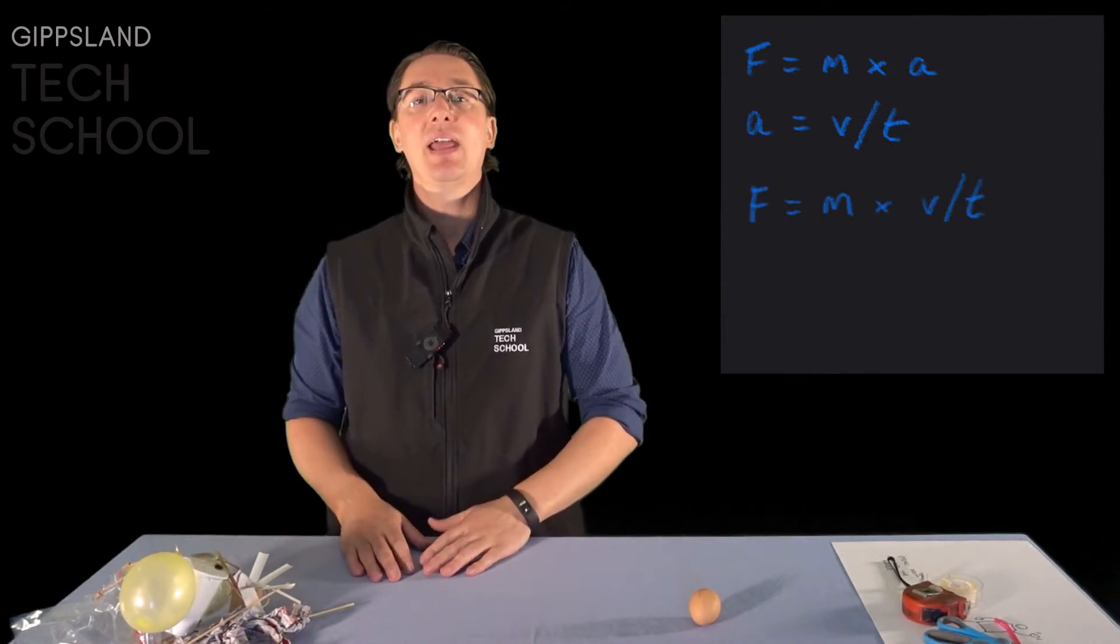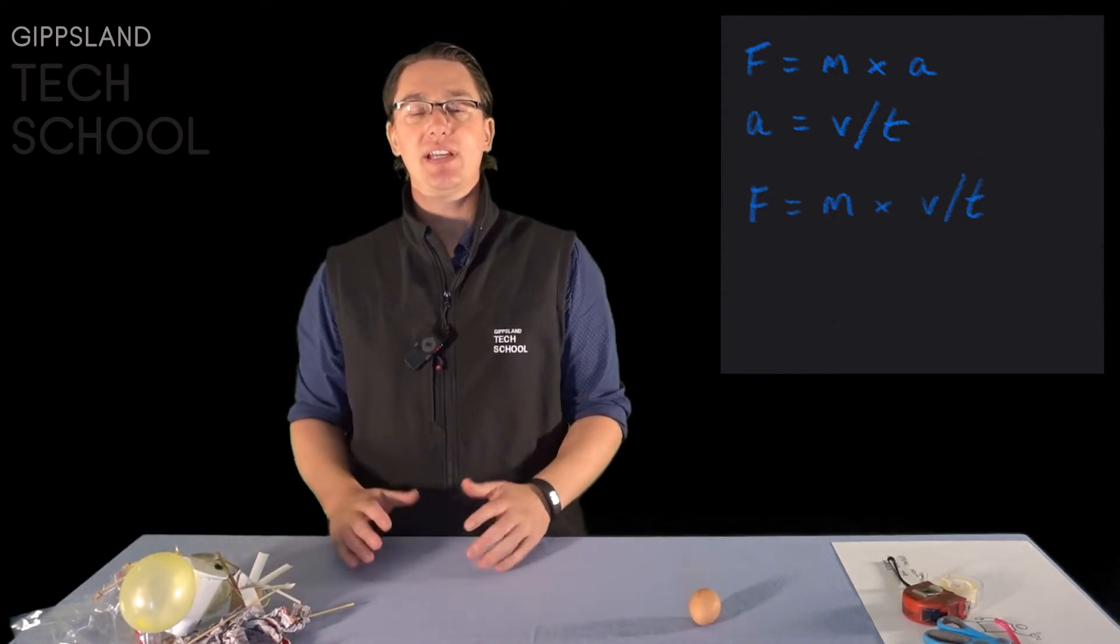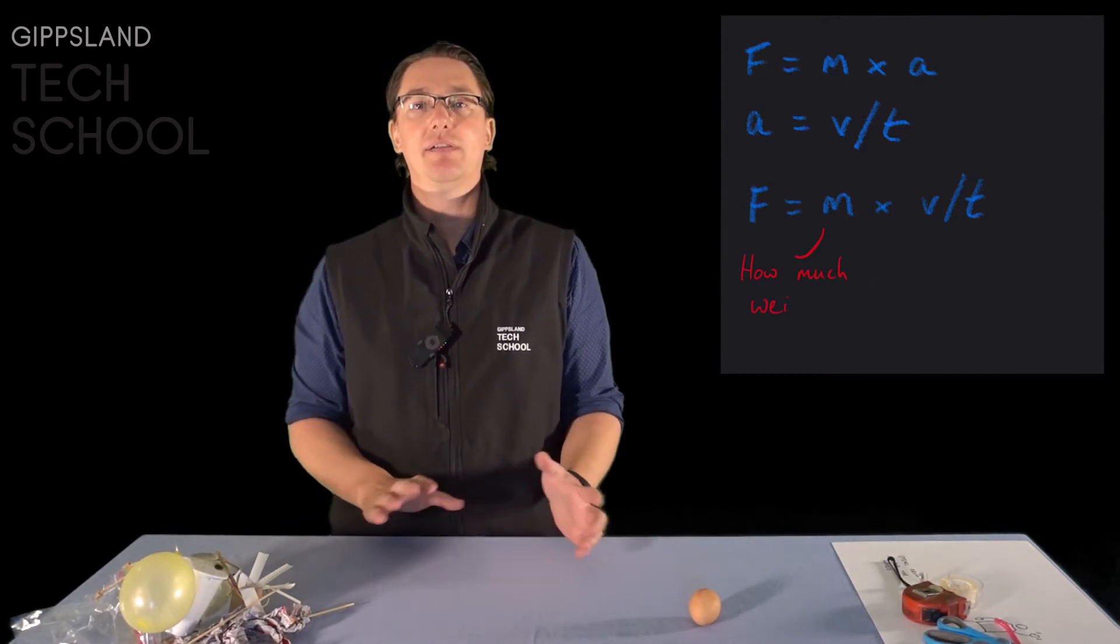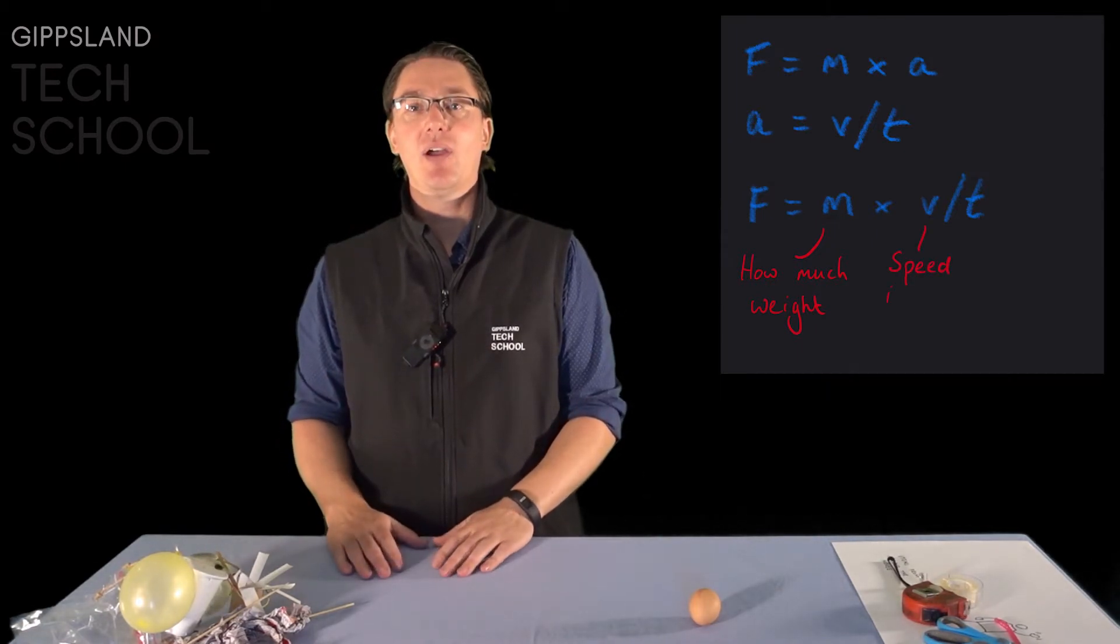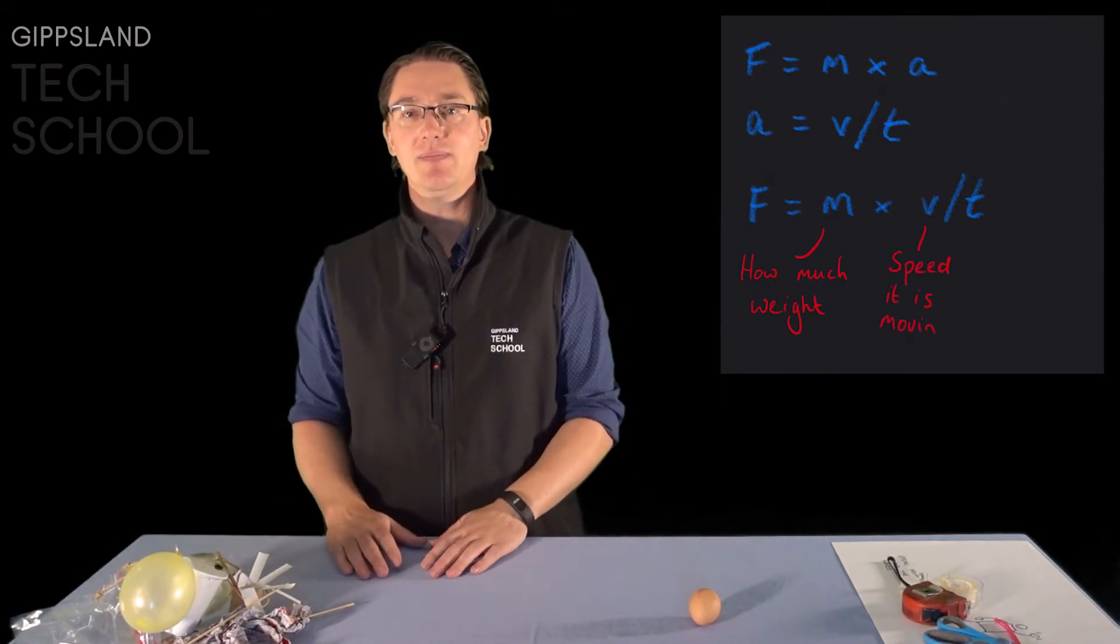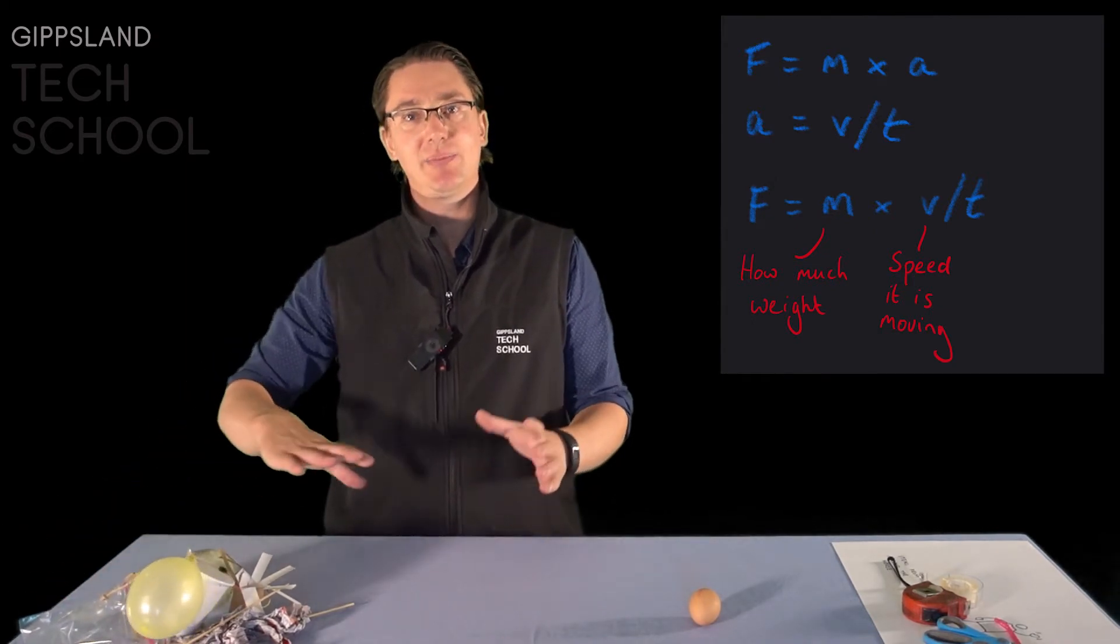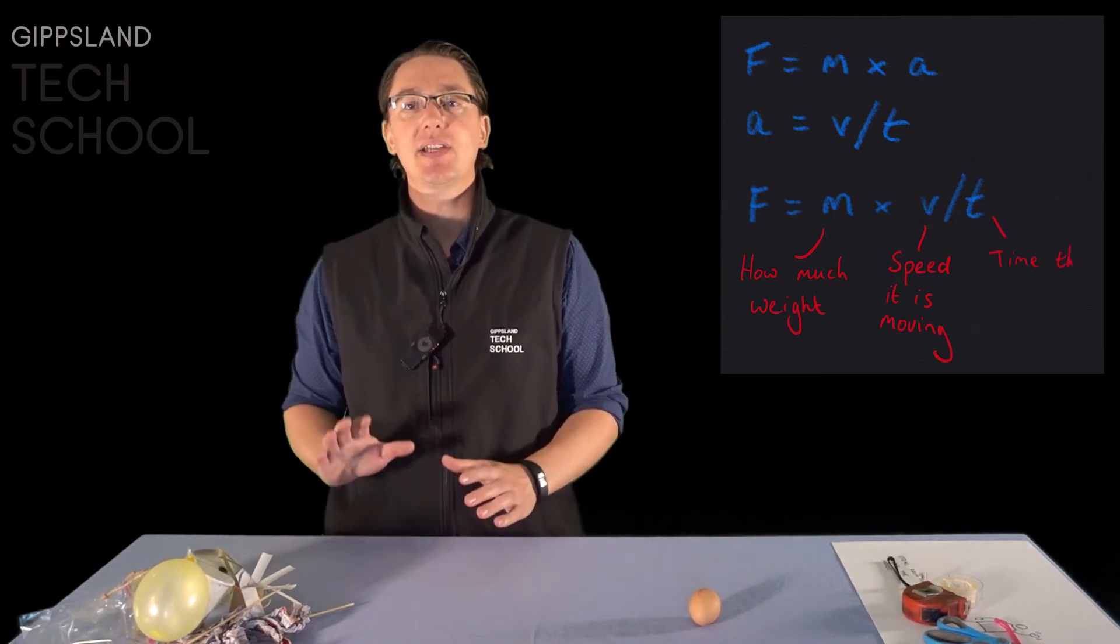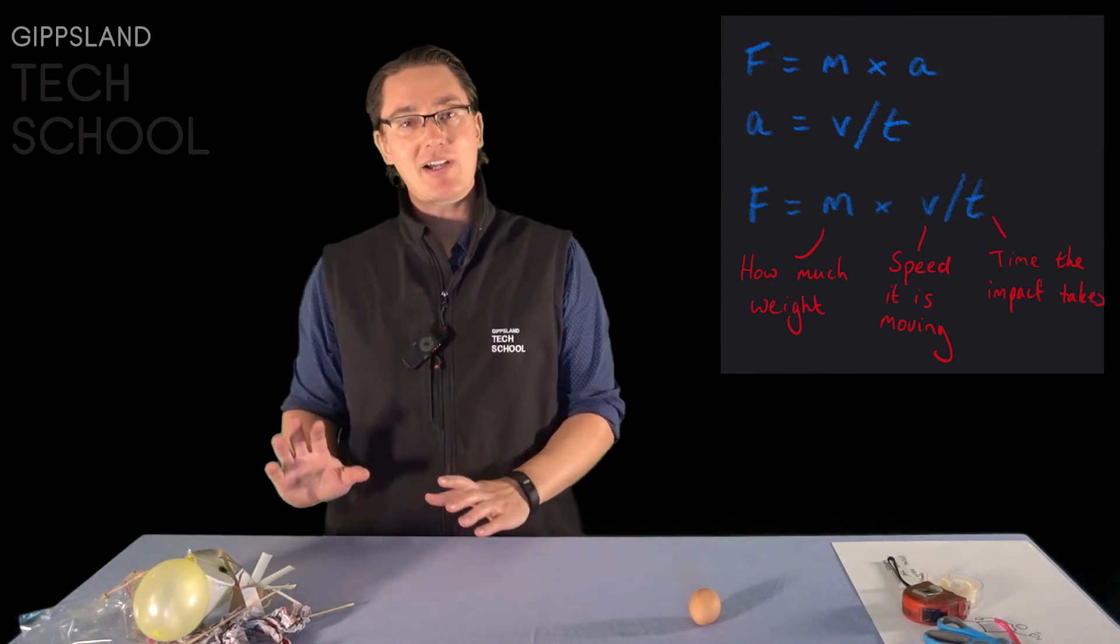Now if we play around with any of those three things, we can reduce the amount of force. So by keeping the mass lower, by keeping it as light as possible, we're going to reduce the amount of force. By slowing down the acceleration or the velocity that it's moving, we can reduce the force. That's why I tried to use the parachute and I had the balloons to try and slow down the velocity that it was moving at. Or if we can increase the time that the velocity change happens over, that's where my crumple zones came in.